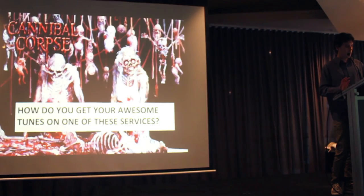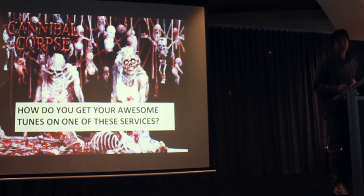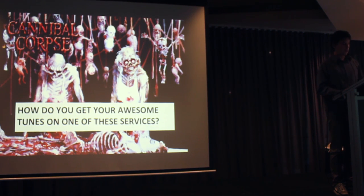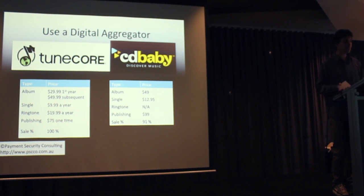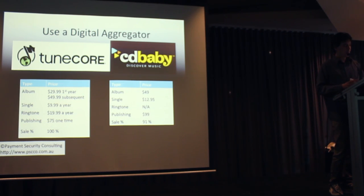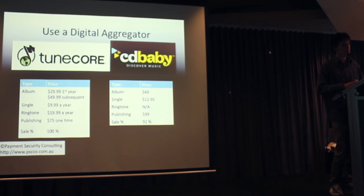So how do you actually get your music onto these services? For iTunes and all hundreds of the different services, you can use what's called an aggregator. There are two major aggregators in the market: TuneCore or CD Baby. What they offer is you pay a fixed price and you get your music onto a service. With the TuneCore system, you're paying less money upfront — $30 for the first year and then $50 each subsequent year to have your album listed.